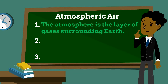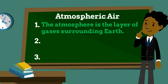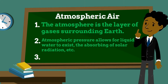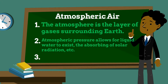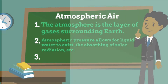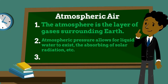The atmosphere of Earth is the layer of gases, commonly known as air, that surrounds the planet and is retained by the Earth's gravity. The atmosphere protects life on Earth by creating pressure allowing for liquid water to exist on the surface, absorbing ultraviolet solar radiation, warming the surface through heat retention, and reducing temperature extremes between day and night.